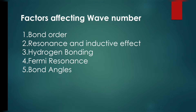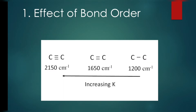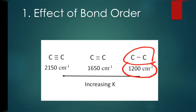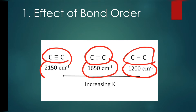The first factor is bond order, which is the number of bonds formed between two atoms. For a carbon-carbon single bond the wave number is lower. With a double bond the wave number increases, and for C triple bond C the wave number is 2150. So an increase in bond order causes an increase in vibrational frequency.